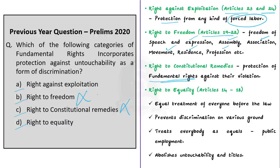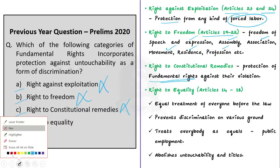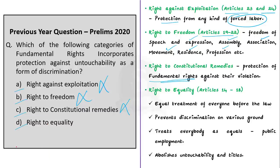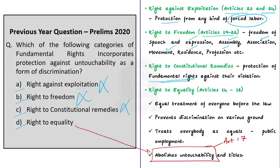The right to equality is covered from Articles 14 to 18. It provides for equal treatment of everyone before the law, prevents discrimination on various grounds, treats everybody as equals in matters of public employment, abolishes untouchability, and abolishes titles. Particularly, Article 17 of the Indian Constitution, which is under the right to equality part, explicitly abolishes untouchability. That is why the correct answer is option D, right to equality.